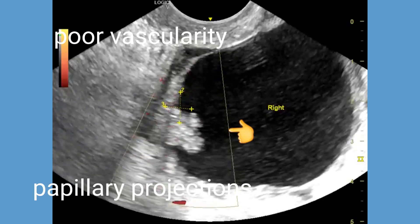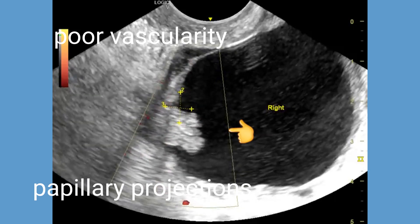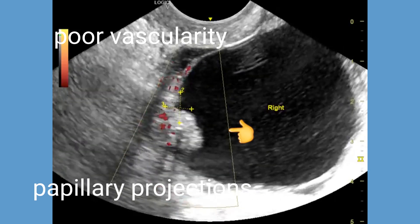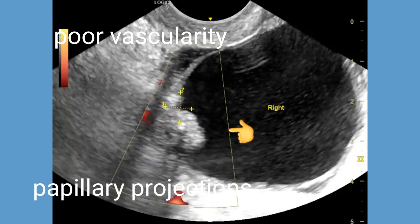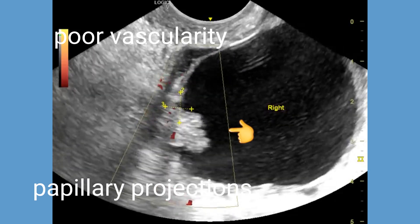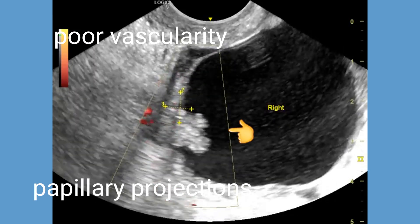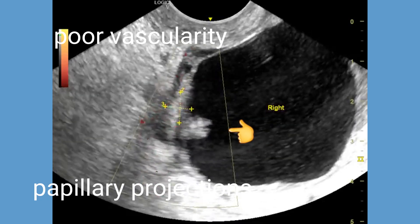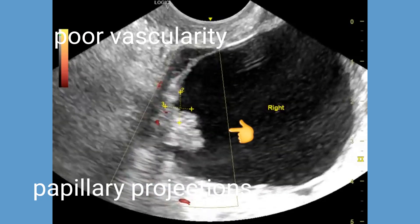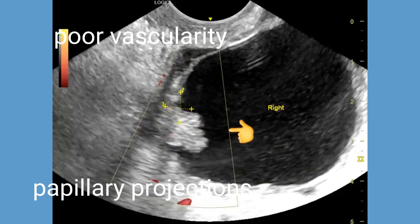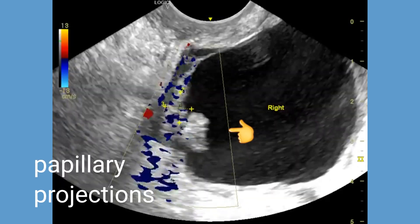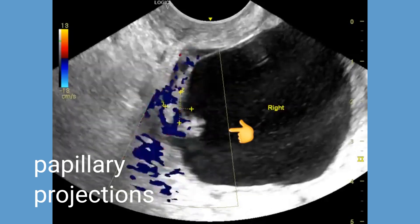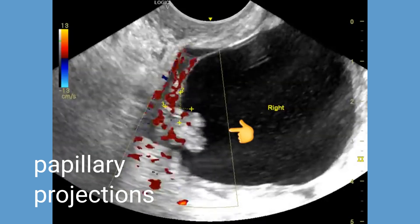The left ovary is normal and there is no ascites or lymphadenopathy. This case is challenging because the cystic mass with a mural nodule and papillary projections could represent a benign or malignant ovarian neoplasm.